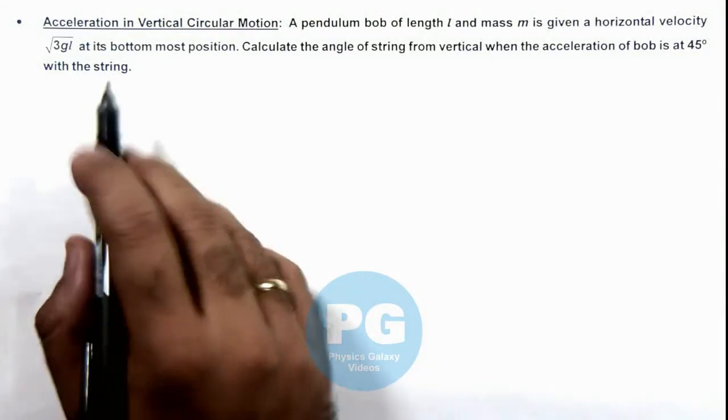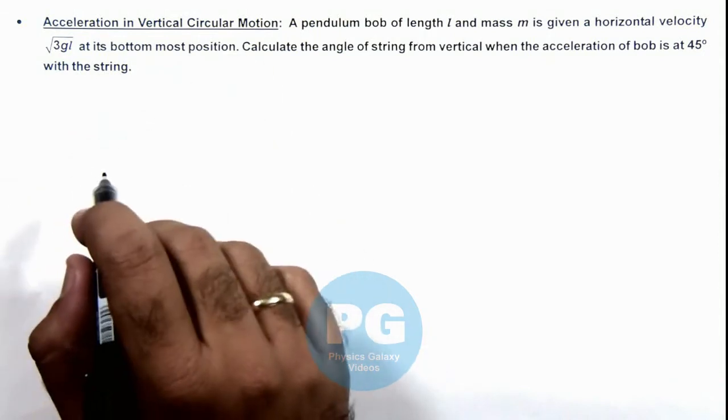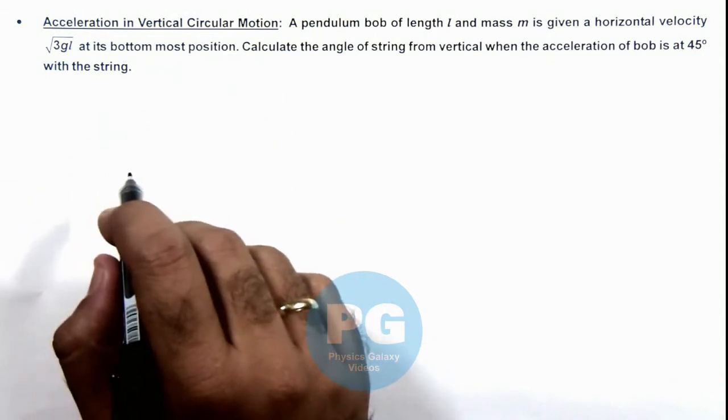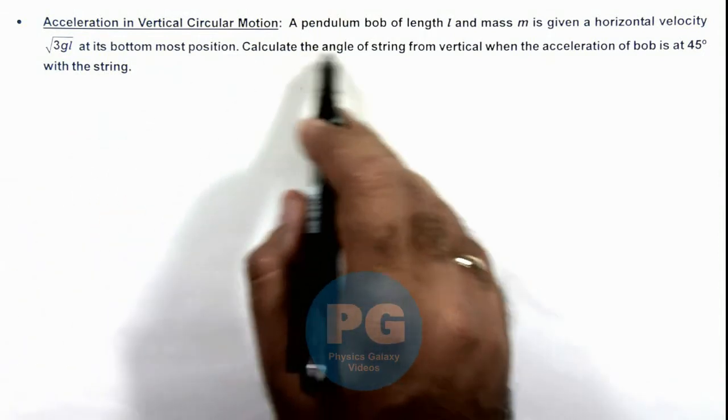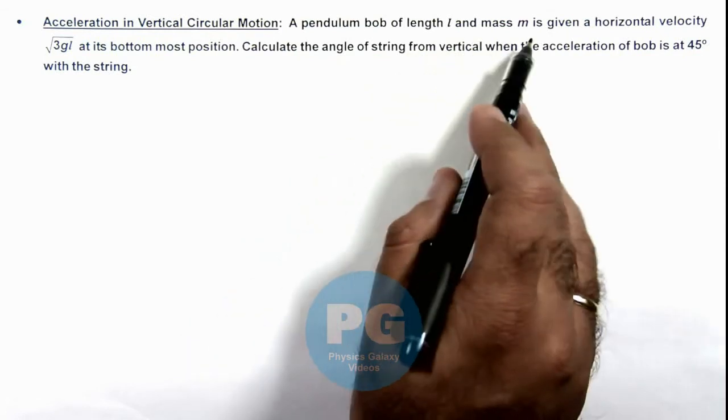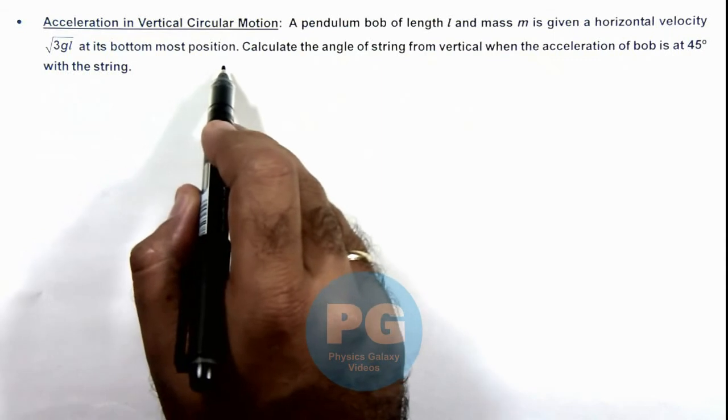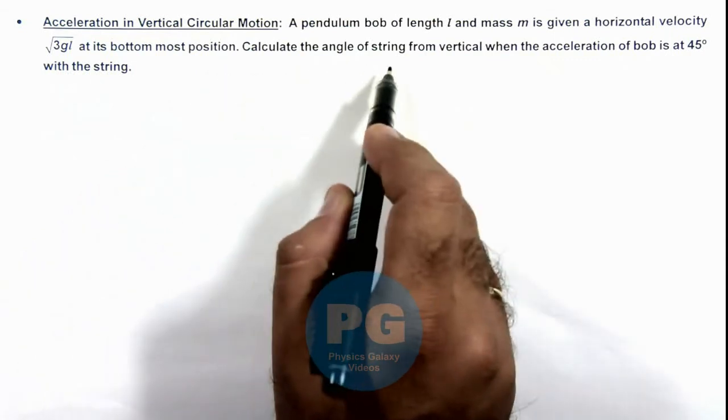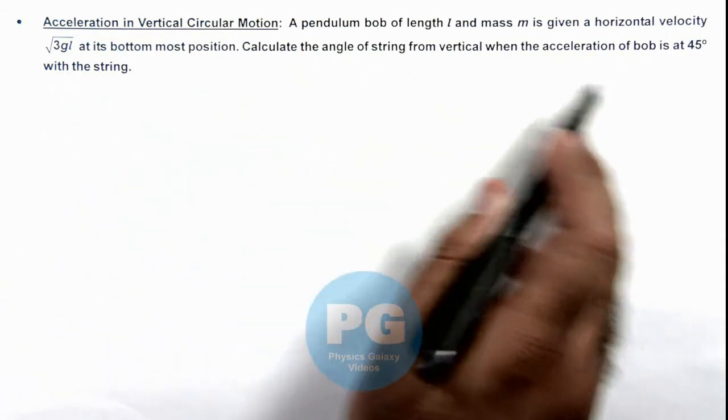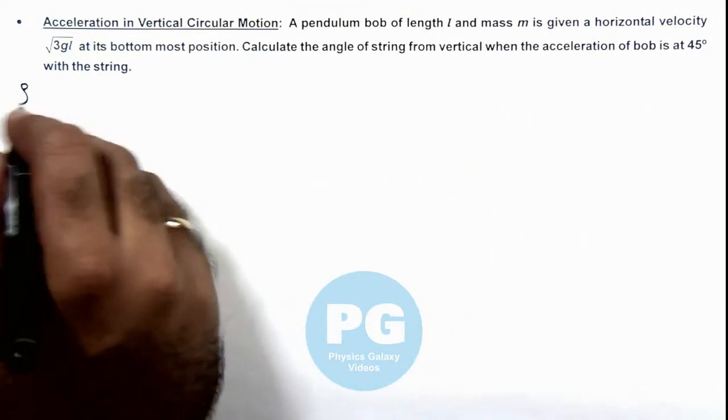Here we'll study about the acceleration of a particle in vertical circular motion. We are given that a pendulum bob of length l and mass m is given a horizontal velocity √(3gl) at its bottom most position. Calculate the angle of string from vertical when the acceleration of bob is at 45 degrees with the string.